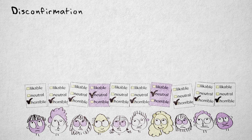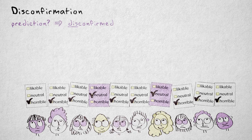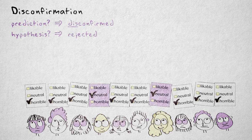Obviously, in this case, our prediction turned out to be false. Logically speaking, empirical findings that contradict the hypothesis should lead to its rejection.